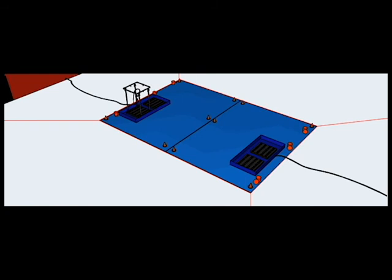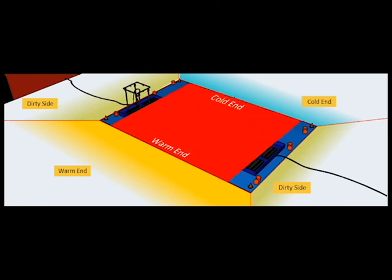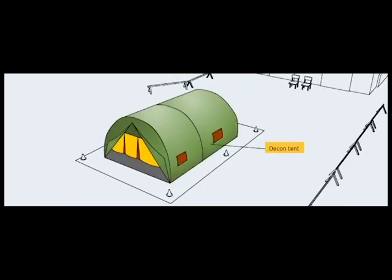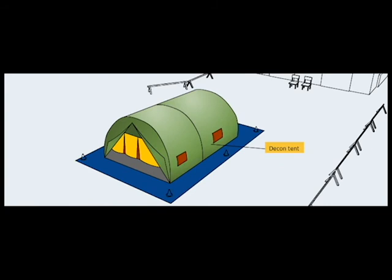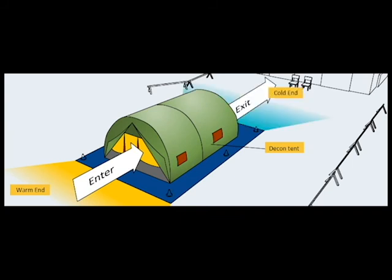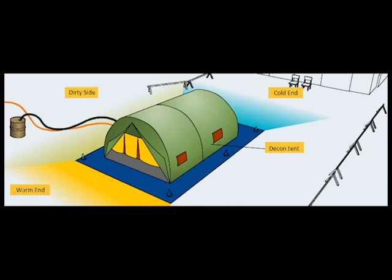Utilities and supplies should still be concentrated on the dirty side and victims will still proceed through the process from the warm end to the cold end. If a decon tent is used, position it on the tarp in a very similar manner to a portable decon shower. The entrance to the tent should open toward the warm end of the decon corridor and exit toward the cold end of the corridor. All utilities should be concentrated on the dirty side.